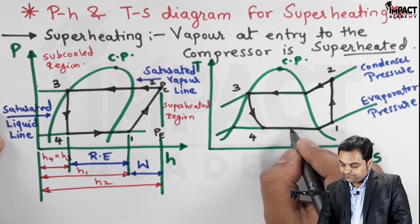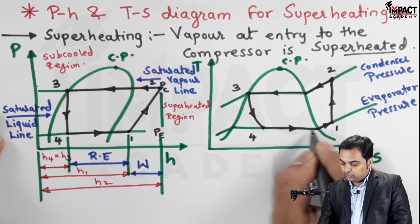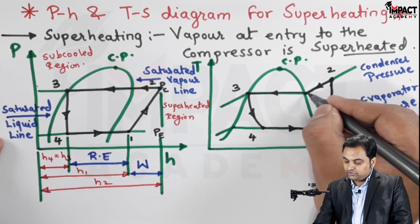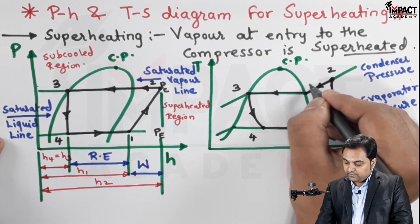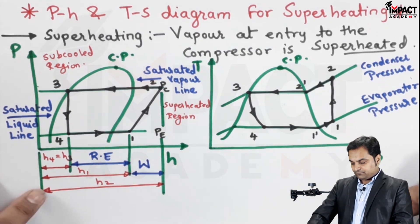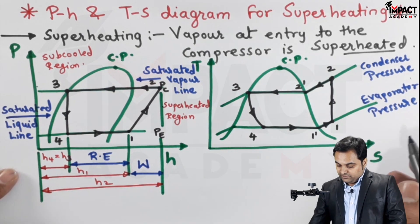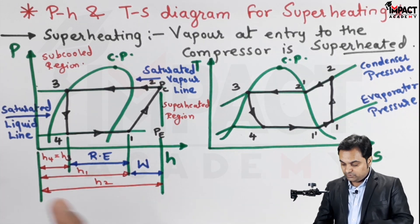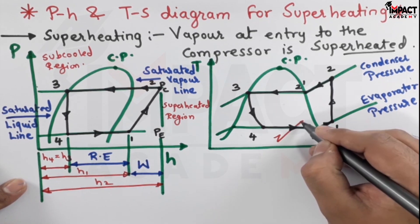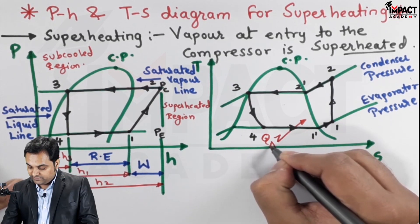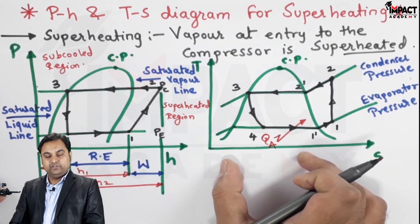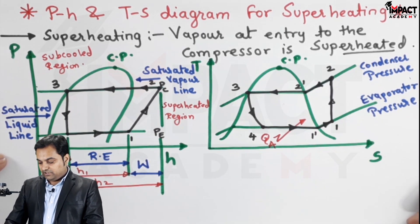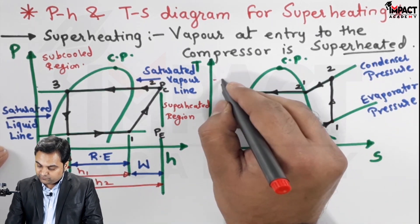The point crossing the saturated vapor line is denoted as one-dash, and the upper crossing is denoted as two-dash. The heat absorbed by the refrigerant during process four to one is Q_A — that is the refrigeration effect. During process one to two, the work of compression is consumed. When the vapor is in the superheated region, the temperature of the refrigerant is far greater.